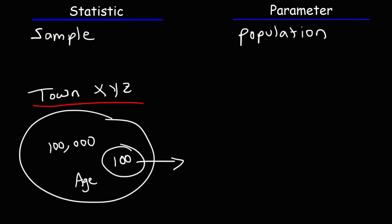So the average age of those 100 individuals would be the sample mean — that is a statistic. The true average age of all 100,000 residents of town XYZ would be the population mean — that's a parameter. So the sample is a small subset of the population: 100 individuals out of the population of 100,000. Hopefully that helps you see the difference between a sample and a population.